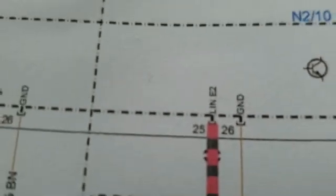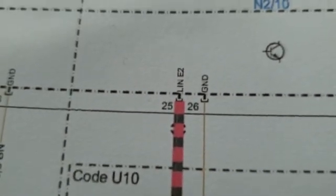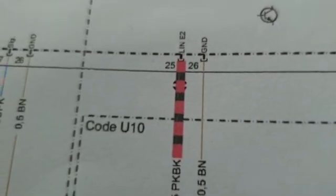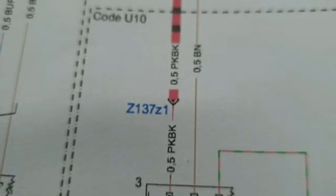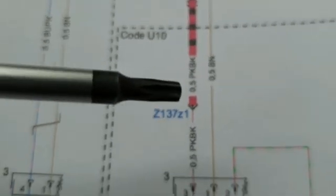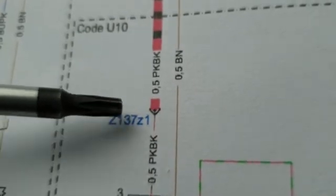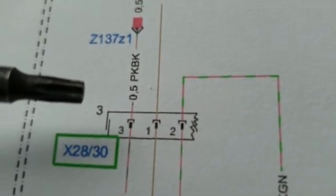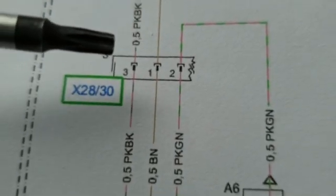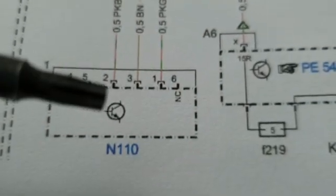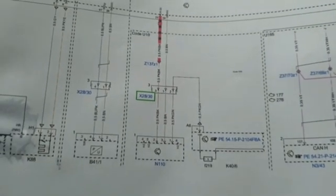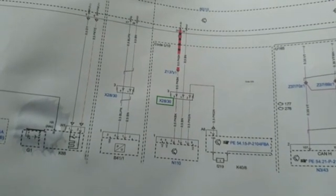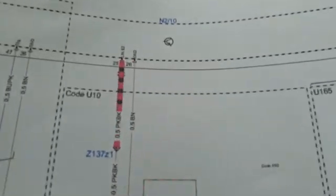From the SRS module on pin 25 there's a LIN line — a pink and black wire — that goes to Z137/Z1, which is like a central hub where the line splits. It then continues to a connector under the passenger seat, and from there to N110, which is the weight sensor. The weight sensor checks if someone is sitting on the seat; if not, the airbag will not deploy. The reason I say passenger seat is that the front airbag doesn't have a communication line.